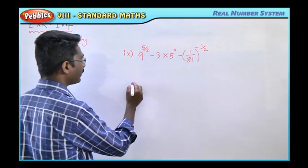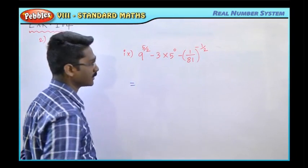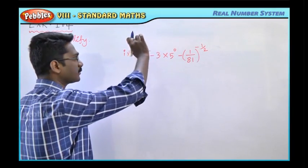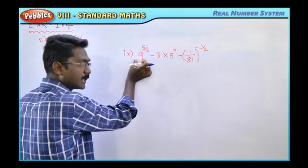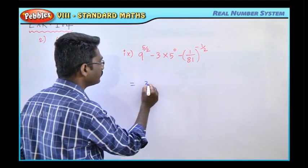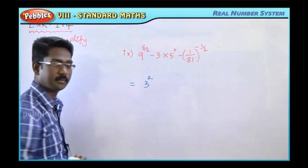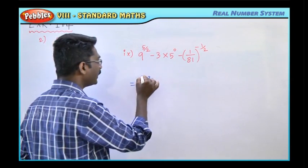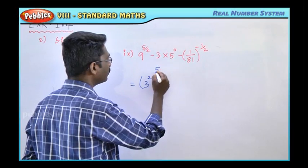First of all, let us know 9 power 5 by 2. First number 9 power 5 by 2, we will change the base 9. We will change 3 square, 3 into 3, 9. Therefore, 3 square whole power 5 by 2.